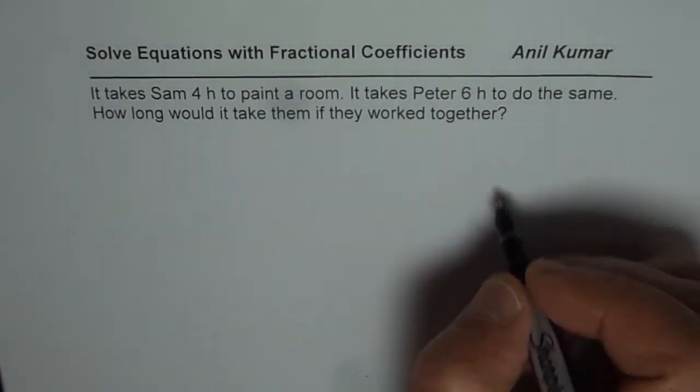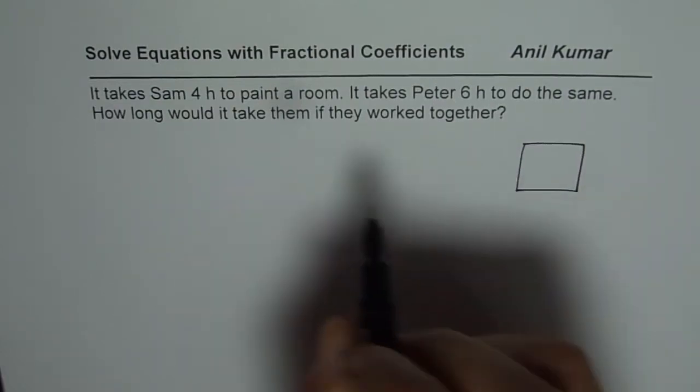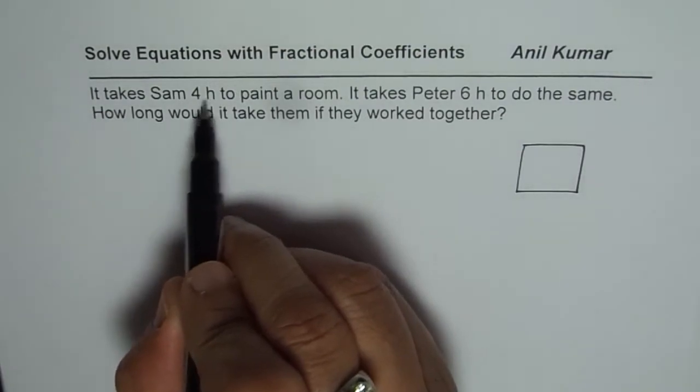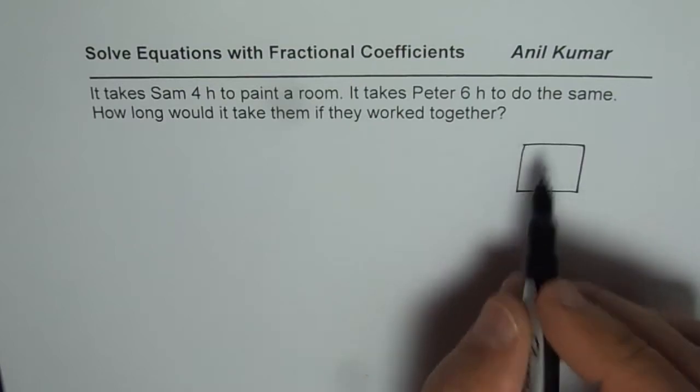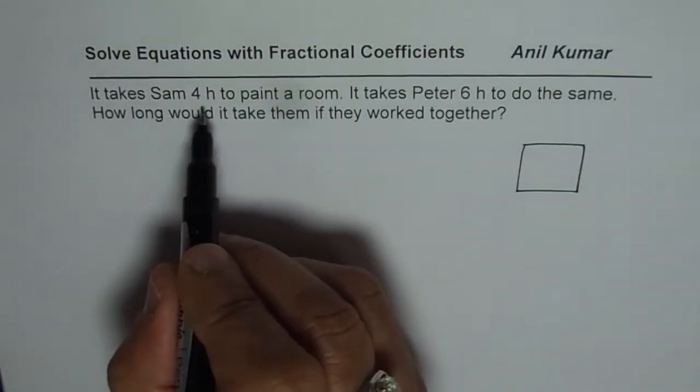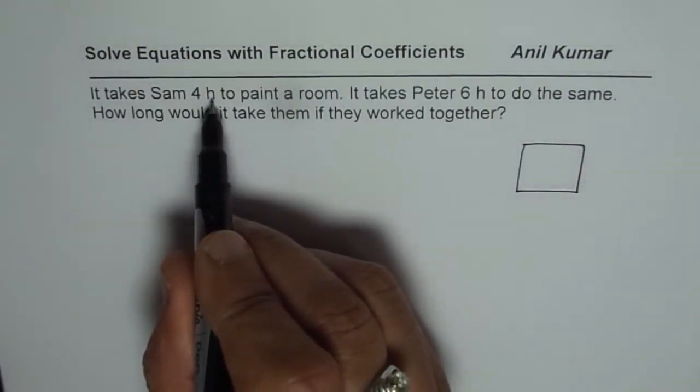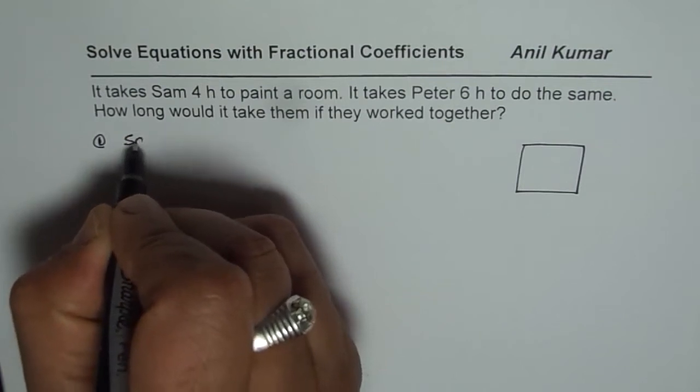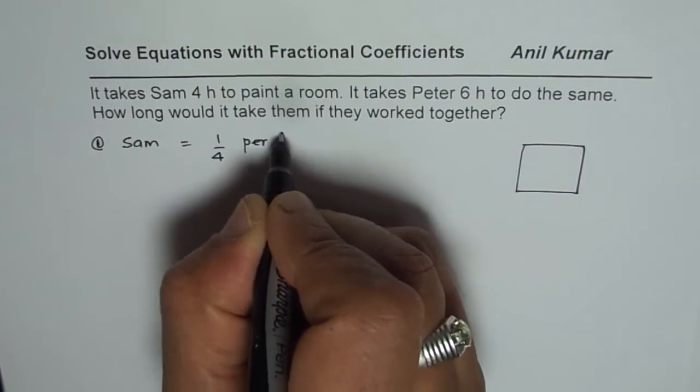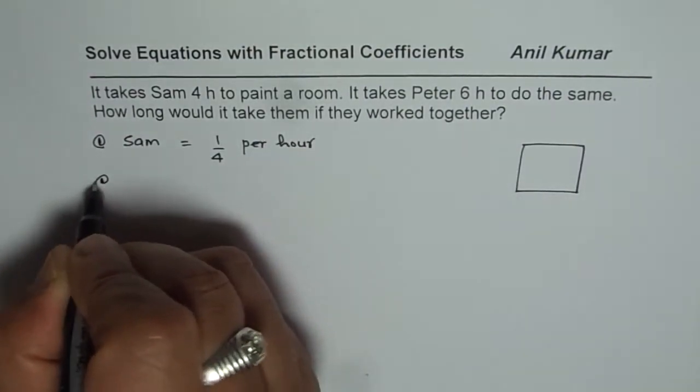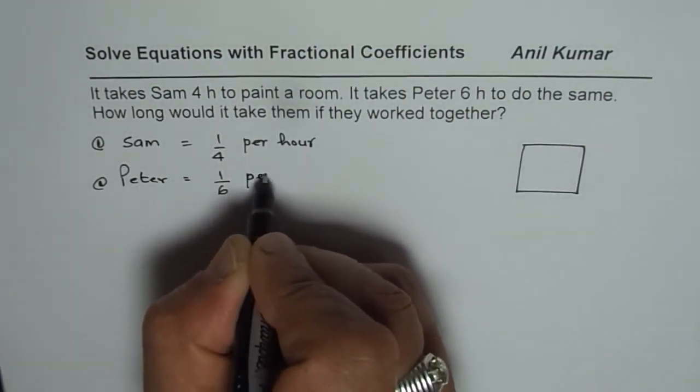What we are given here is that one particular job, painting one room. The speed or rate at which Sam can paint is one-fourth in an hour. Four hours to paint the whole room, so it takes one-fourth per hour. The rate for Sam is one over four per hour. Rate for Peter is one over six per hour.